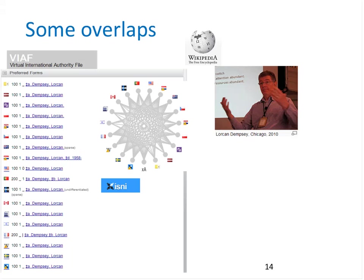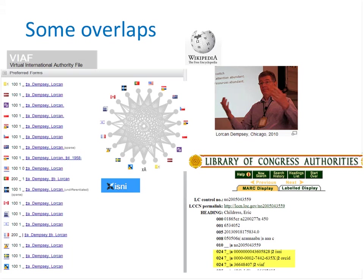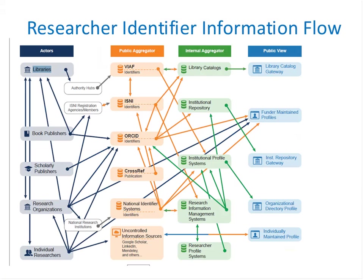There are overlaps. Here, Lorcan Dempsey's VIAF cluster shows he is represented in 16 national authority files, as well as by a Wikipedia article and the ISNI database. My OCLC colleague Eric Childress has an authority record with his ISNI, ORCID, and VIAF identifiers. The same information about a specific researcher may be represented in multiple databases, and only a subset interoperates with each other. We've diagrammed the flow of information describing researchers and identified researcher outputs such as publications among classes of actors and systems. An arrow going from one entity to another indicates that information flows from one entity to the other.